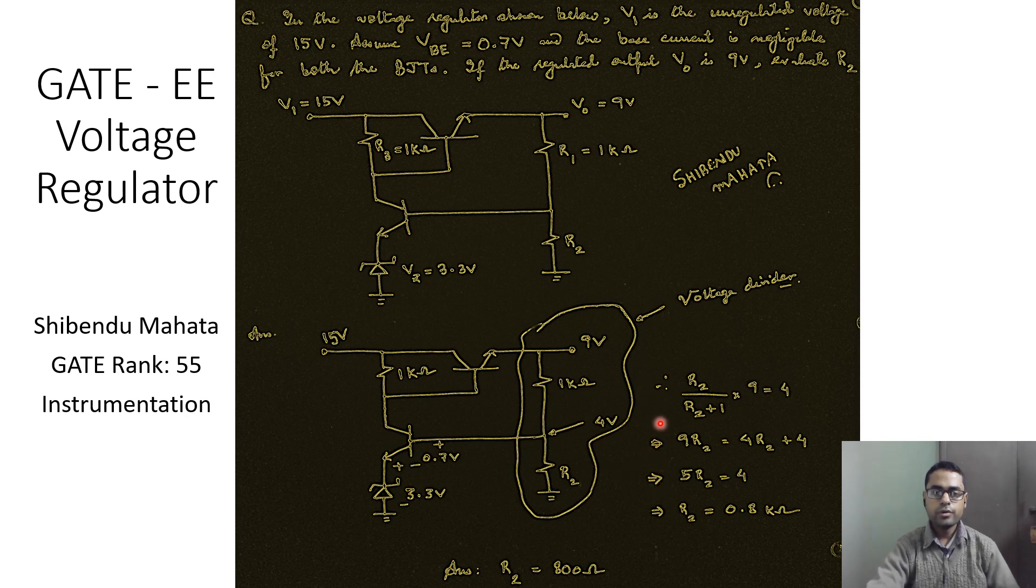Upon solving for this equation, we obtain the value of R2 as 0.8 kilo ohms, which is equal to 800 ohms. So this is a very simple question. If you look at this part of the circuit, it turns out that this did not really play a role in the circuit analysis equations.